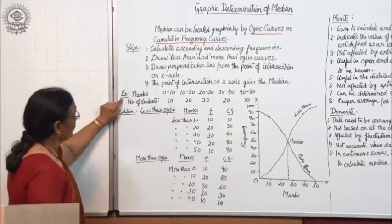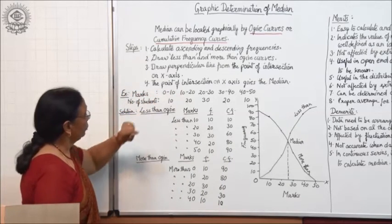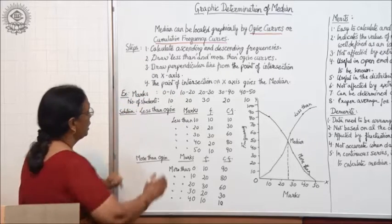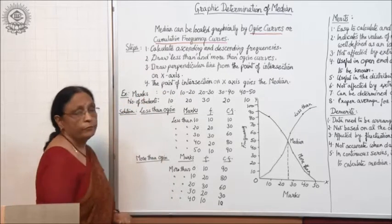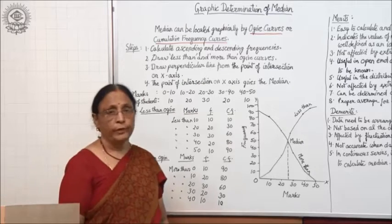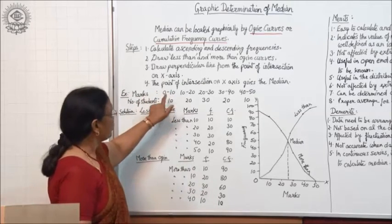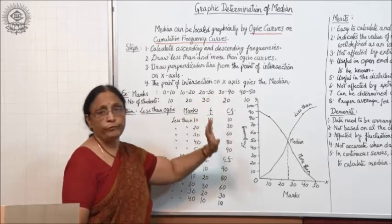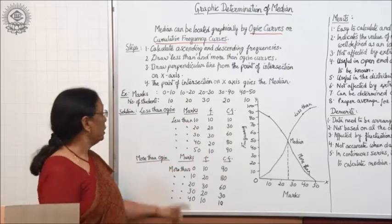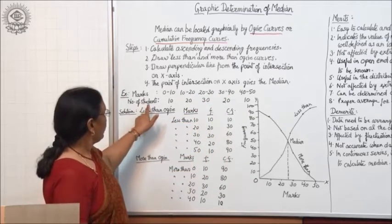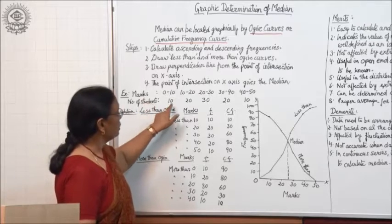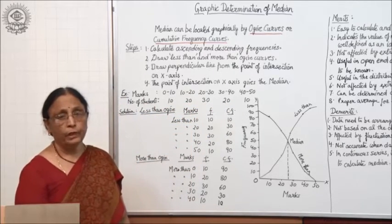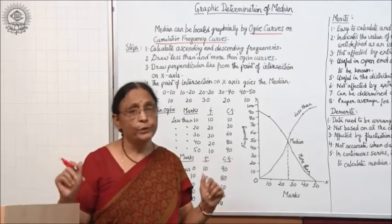Let us take an example. The data given consists of marks and number of students, where number of students means frequency. Marks are given in equal class intervals: 0–10, 10–20, 20–30, 30–40, and 40–50. The corresponding frequencies (number of students) are 10, 20, 30, 20, and 10.